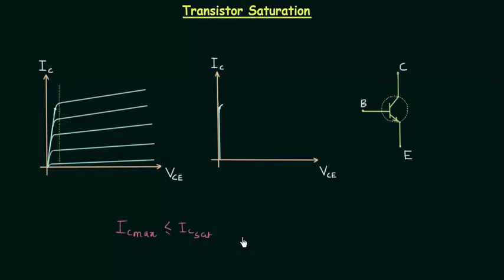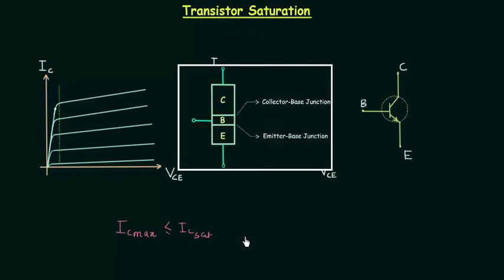We try to avoid the saturation conditions because in the saturation region the collector-base junction is forward biased and there is distortion in the amplified signal. We are trying to amplify the weak input signal using the transistor, and for this purpose the transistor must operate in the active region.